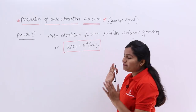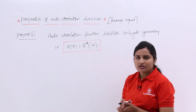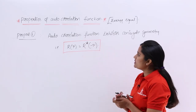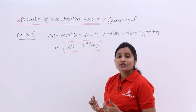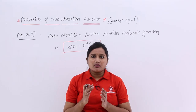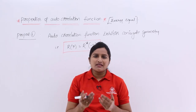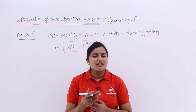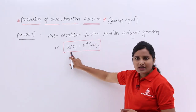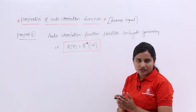The first property of autocorrelation function of energy signals is that the autocorrelation function exhibits conjugate symmetry. Conjugate symmetry property means r(τ) is equivalent to r*(−τ). If you take the mirror image of the signal and take its complex conjugate, you will get the same signal.